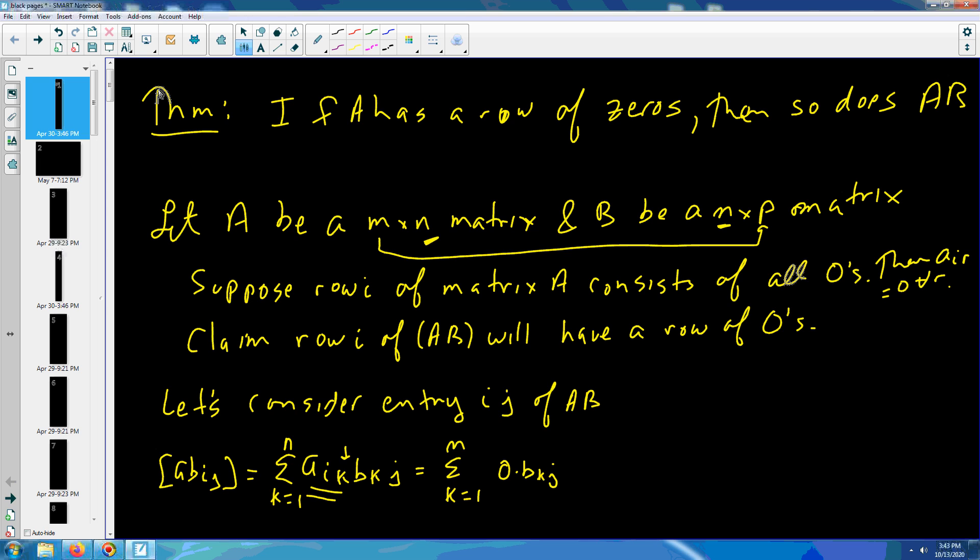Which is the summation of zero, which is zero, which implies row i of AB is all zeros.